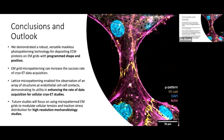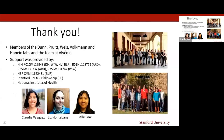To summarize, we demonstrated a robust, versatile, maskless photopatterning technology for depositing ECM proteins on EM grids with programmed shape and position. This EM grid micropatterning technology can increase the success rate of cryo-ET data acquisition. Lattice micropatterning enabled observation of an array of structures at endothelial cell-cell contacts, demonstrating its utility in enhancing the rate of data acquisition for cellular cryo-ET studies. In the future, we want to focus on using this technique for high-resolution mechanobiology studies. Now, on to Matthijn, who will walk you through the use and benefits of micropatterning for cryo-focused-ion beam milling in cryo-ET.